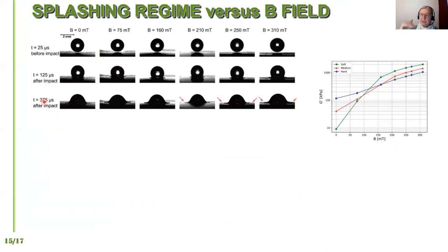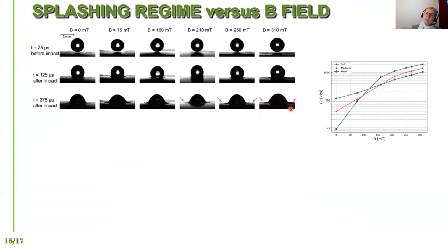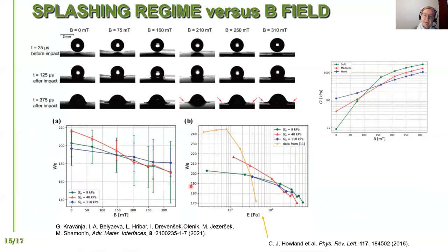At very low magnetic field with reasonable drop height, we observed nice deposition: the droplet falls, makes a thin sheet of liquid on the surface, and the sheet collects back into droplet form with no additional splashing. On the other hand, at about 300 millitesla under the same conditions, we observed many secondary droplets — the ethanol was splashed all over the surface. We then investigated the critical Weber number at which the transition from deposition to splashing occurs, and observed that with increasing magnetic field, this critical Weber number is reduced — from about 200 down to below 180.